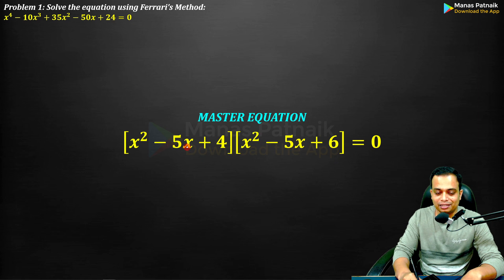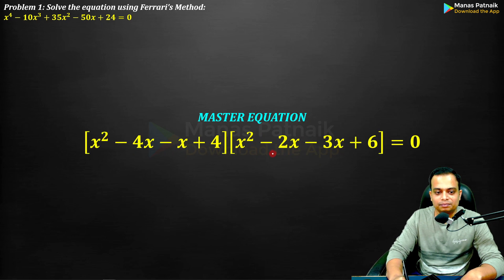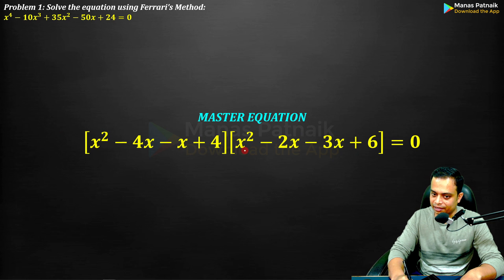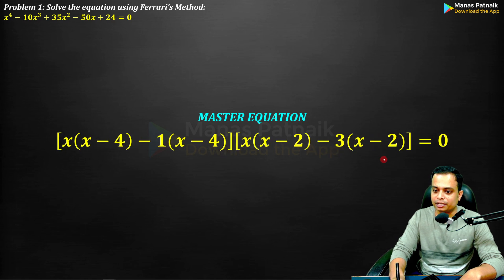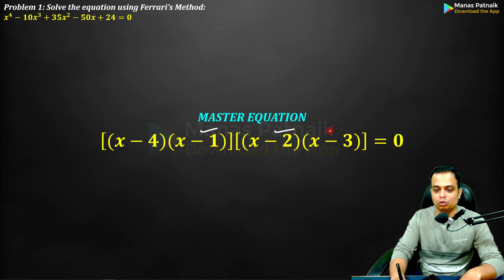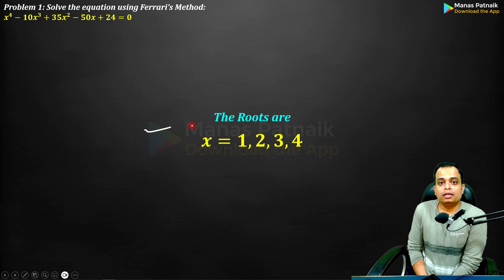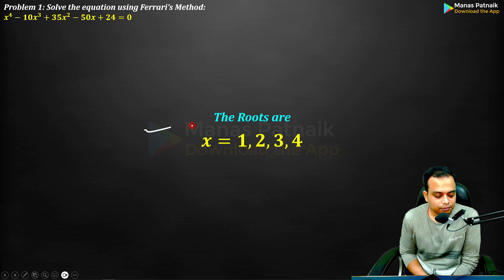This gives two quadratics: x² − 5x + 4 = 0 and x² − 5x + 6 = 0. For the first: split −5x as −4x − x, take x as common to get x(x − 4) and −1(x − 4), so (x − 4)(x − 1) = 0. For the second: split −5x as −2x − 3x, giving (x − 2)(x − 3) = 0. The four roots are x = 1, 2, 3, and 4 — the roots of the quartic equation found using Ferrari's method.